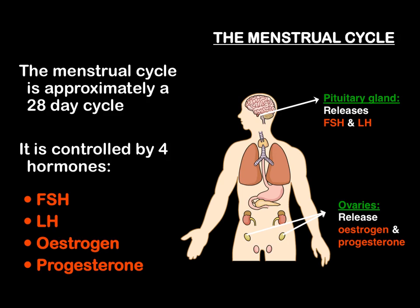The menstrual cycle is a monthly cycle that women go through in order to ovulate. Ovulation is the release of an egg from the ovary. It is approximately a 28-day cycle and is controlled by four hormones: FSH (follicle-stimulating hormone), LH (luteinising hormone), oestrogen, and progesterone. Both FSH and LH are produced by the pituitary gland, whereas oestrogen and progesterone are produced by the ovaries.